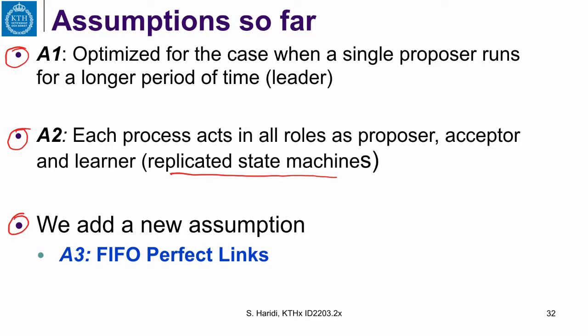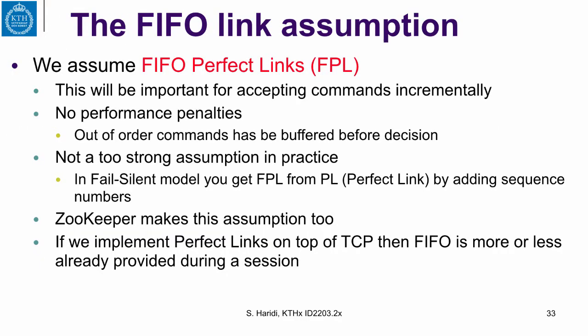In a perfect FIFO link, messages from a source to a destination arrive in the same send order. So we assume a perfect FIFO link, it's called FIFO perfect link. And this will be important for accepting commands incrementally. There should be no performance penalty because out of order commands have to be buffered anyway before decision. So the issue here is can we buffer in the link abstraction or should we buffer in the consensus abstraction? Here we take the decision to buffer in the link abstraction. It is a better choice given that buffering is already done at the lower network stack.